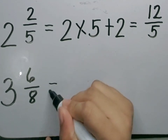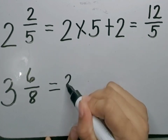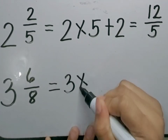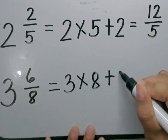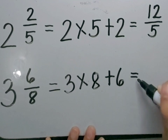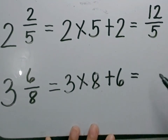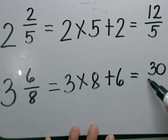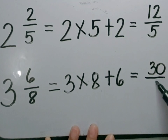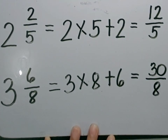Let's have 3 and 6 over 8. Let's multiply the whole number and the denominator, then add the numerator. 3 times 8 is equal to 24, plus 6 is equal to 30. Then copy the denominator, 8. The improper fraction of 3 and 6 over 8 is 30 over 8.